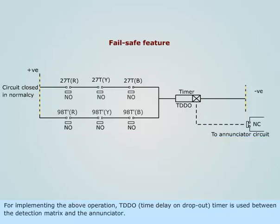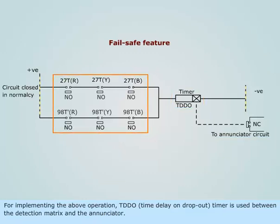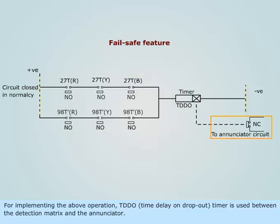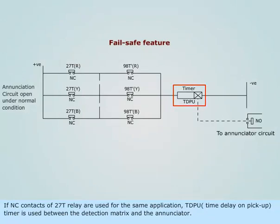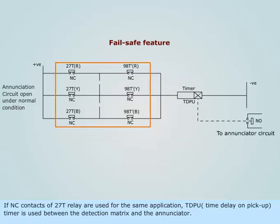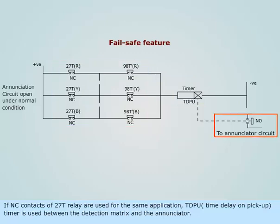For implementing the above operation, a TDDO (time delay on dropout) timer is used between the detection matrix and the annunciator. If NC contacts of 27T relay are used for the same application, a TDPU (time delay on pickup) timer is used between the detection matrix and the annunciator.